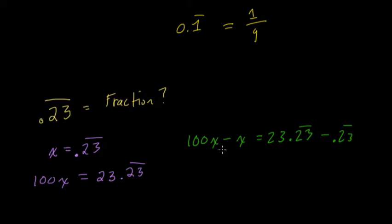So, you know, think of 100x minus x. What's that in terms of algebra? That's 99x. And what's 23.23 repeating minus 0.23 repeating? Well, when you subtract the 0.23 repeating, that whole repeating section disappears, and all that's left is the 23, the whole numbers section.